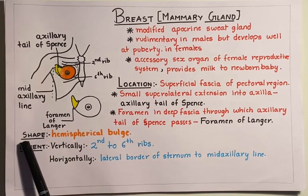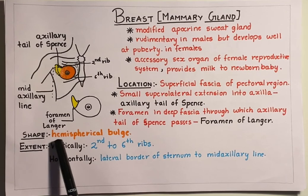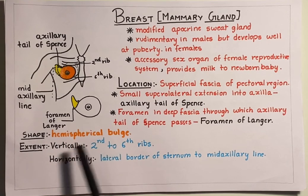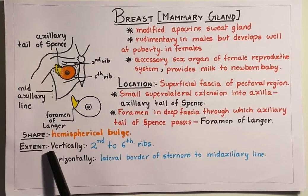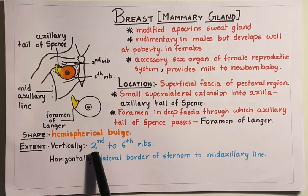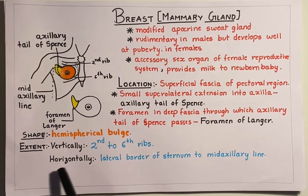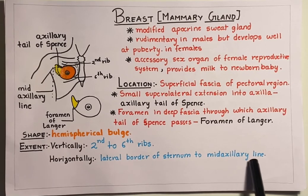Now coming to the shape of the breast: the breast is a hemispherical bulge. It extends vertically from the 2nd to 6th ribs and horizontally from the lateral border of the sternum to the mid-axillary line.